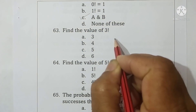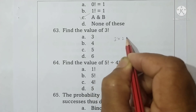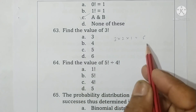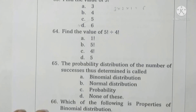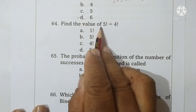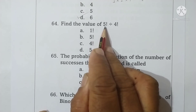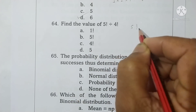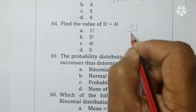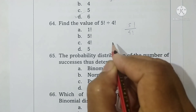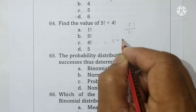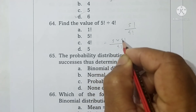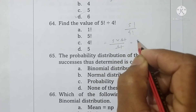For 4 factorial written as 5 factorial upon 4 factorial: 5 × 4! divided by 4! — the 4 factorials cancel and the final answer is 5. Option D is correct.